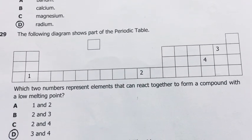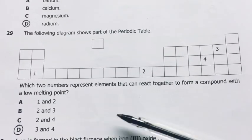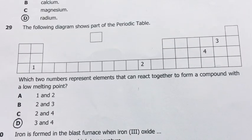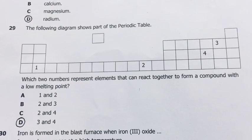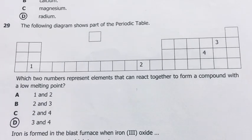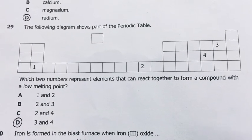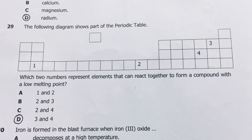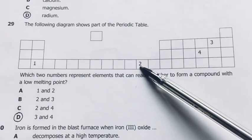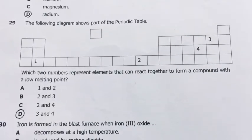Number 29. The following diagram shows part of the periodic table. Which two numbers represent elements that can react together to form a compound with low melting point? Therefore my answer was 3 and 4. When these two react, they are both nonmetals, so they may actually form something which can even be a gas or some kind of a plastic. They're not metals, and they would form a covalent compound, because covalent compounds are formed among nonmetals. Covalent compounds generally have low melting points. So my answer here is 3 and 4.